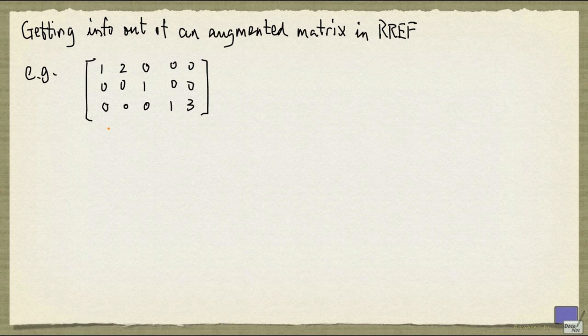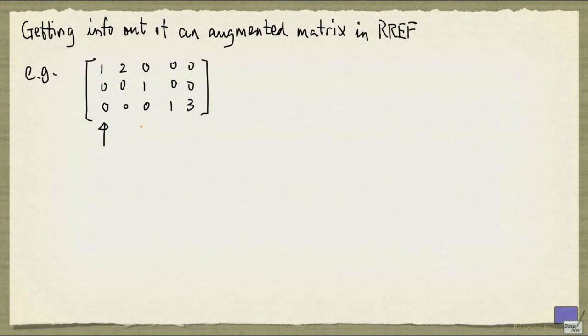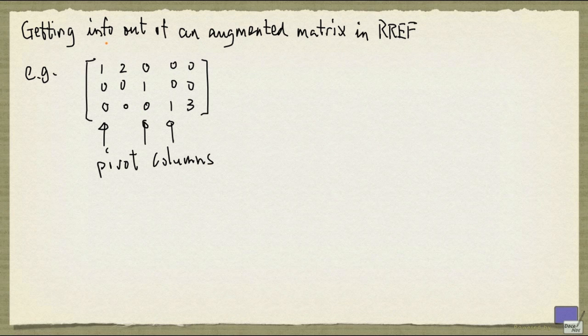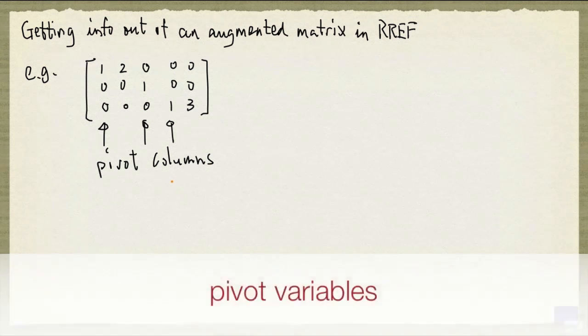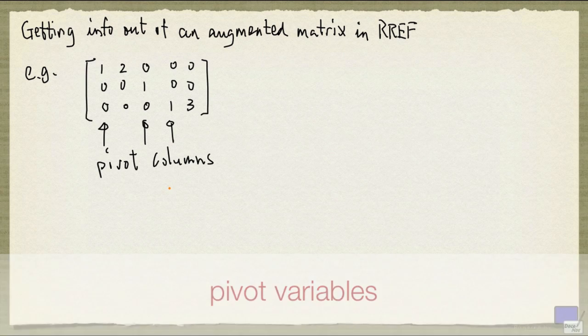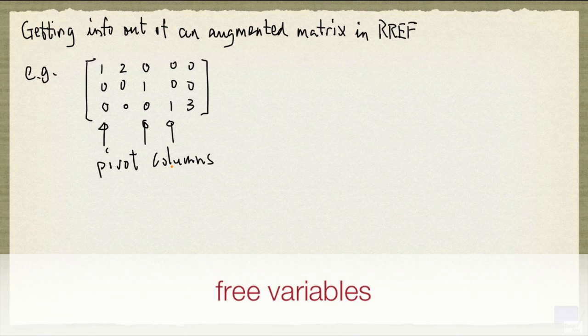Suppose that this matrix is obtained from the augmented matrix of a system of linear equations after performing row reduction. As you can see, this matrix is already in reduced row echelon form. Now, the columns that contain the leading ones are called pivot columns, and the variables that correspond to these columns are called pivot variables. The remaining variables are called free variables.